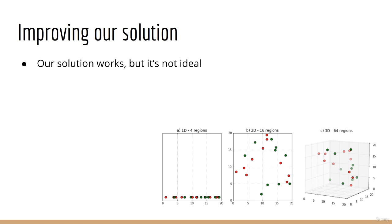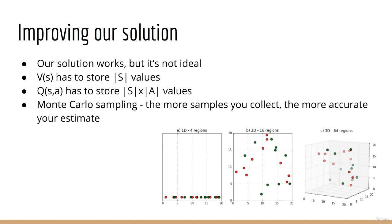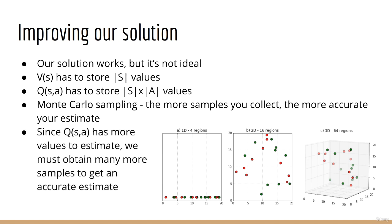At this point, our solution works, but it's not an ideal solution. Let's think about why. First, if you recall, V of S only stores big S values. But Q of S A stores big S times big A values. As you know, with Monte Carlo sampling, the more samples you collect, the more accurate your answer becomes. When we use Q of S A, we have many more values to estimate, and therefore, we have to collect many more samples in order to get an accurate estimate.